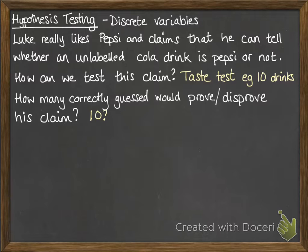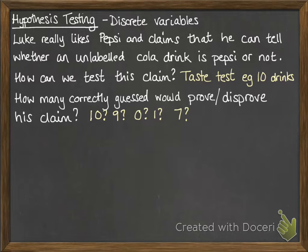If he got 10 correct, you can say yes, he can make that statement. What about if he got 9 out of 10 correct — would you still say he could make that claim? If it was 0 or 1, you can say definitely not, he can't do it. But what about 7 or 6, somewhere in the middle? Where's your cutoff line for deciding whether you're going to accept his claim or not?